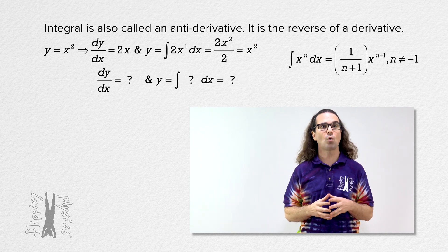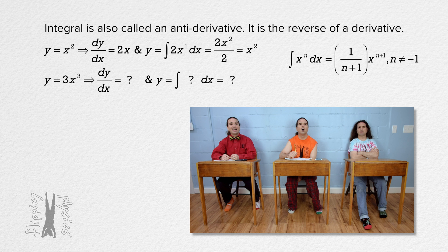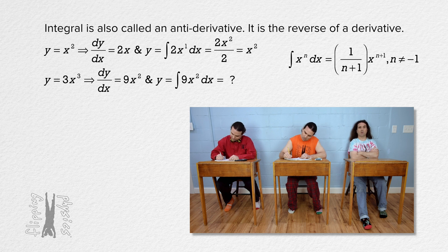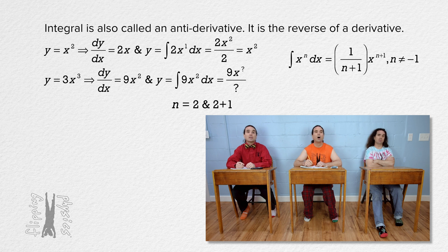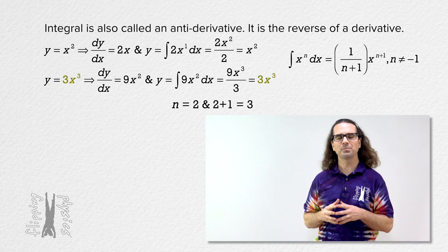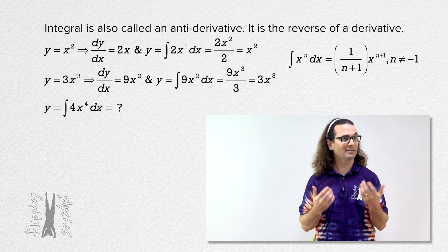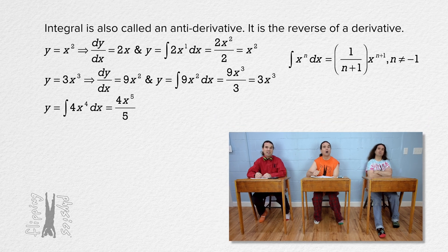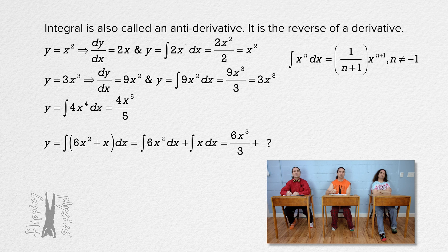Bo, please do both the derivative of y with respect to x and the integral of the function with respect to x for y equals 3 times x cubed. The derivative of 3x cubed equals 3 times 3 or 9 times x squared. We can then take the integral of 9x squared with respect to x. N equals 2, so it works out to be 9 times x to the power 2 plus 1 or 3, all divided by 2 plus 1 or 3, which equals 3x cubed, just like we started with. Now let's do an integral without first doing the derivative. Please take the integral of 4x to the fourth power with respect to x. That equals 4 times x to the power 4 plus 1 or 5, all divided by 5. And Bobby, please take the integral of the quantity 6x squared plus x all with respect to x. That equals 6x cubed over 3 plus x squared over 2, or 2x cubed plus x squared over 2.